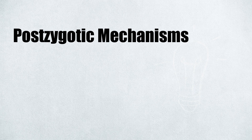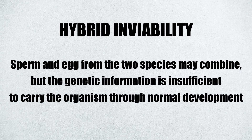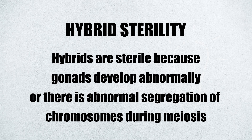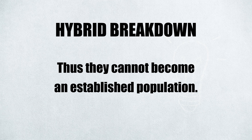Postzygotic mechanisms, on the other hand, prevent hybrids from passing on their genes. They allow fertilization, but non-viable or sterile hybrids are formed. There are three postzygotic isolation mechanisms. First is hybrid inviability — the sperm and egg may combine, but the genetic information is insufficient to carry the organism through normal development, and the embryo dies before birth or hatching. Second is hybrid sterility — hybrids are sterile because gonads develop abnormally or there is abnormal segregation of chromosomes during meiosis. Last is hybrid breakdown, where two related species can hybridize and their first-generation offspring are fertile, but successive generations suffer lower viability or produce sterile individuals, and thus cannot become an established population.